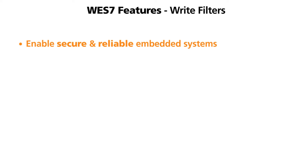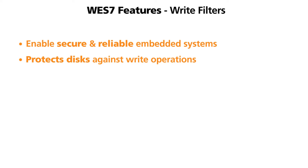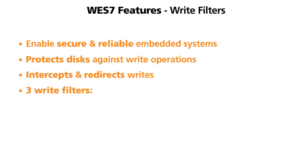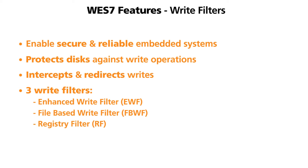Write filters enable building more secure and reliable embedded systems by protecting disks against write operations. They intercept writes and redirect them to a storage location called an overlay. Windows Embedded Standard 7 offers three write filters: Enhanced Write Filter, File-Based Write Filter, and Registry Filter, all of which protect the system at partition and file level.